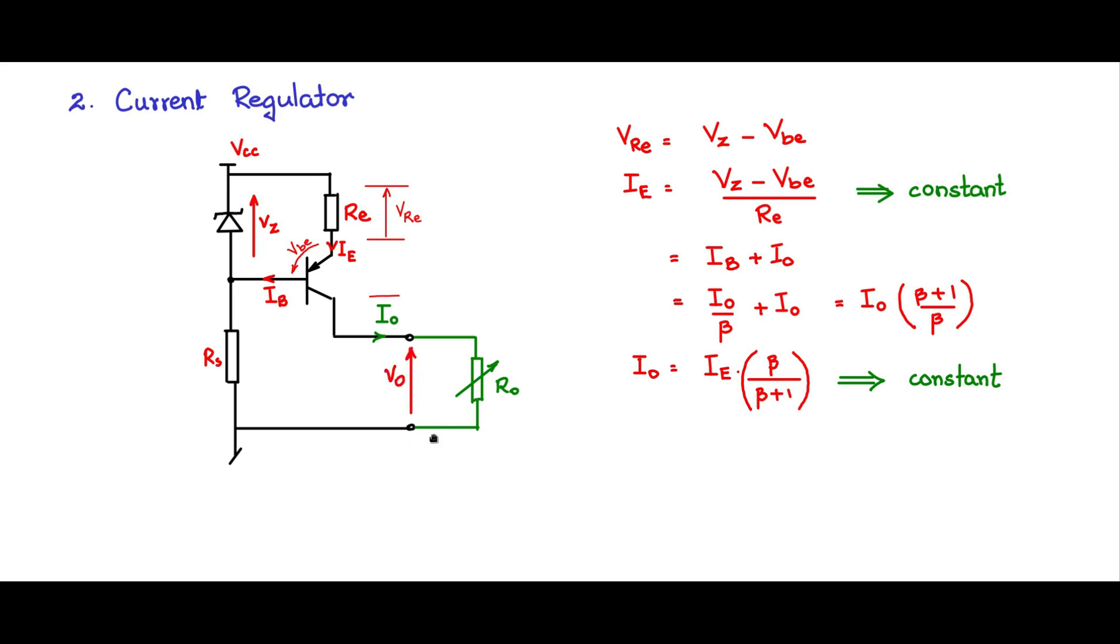Now if you say this is V naught and let us say the voltage across the collector emitter of the BJT, VCE, what is the limiting value of R naught? On one end, I can short circuit this R naught can be 0 and R naught is 0, V naught is 0, there is constant current that is going to flow through it, it will operate perfectly well.